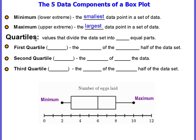Then we have what we call quartiles. They're values that divide the data set into four equal parts. The first quartile, also known as Q1, is the median of the lower half of the data set. This would be your quartile one — the first quartile is the left side of your box.